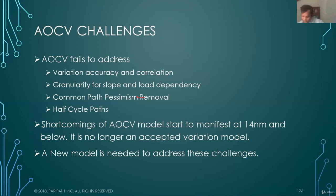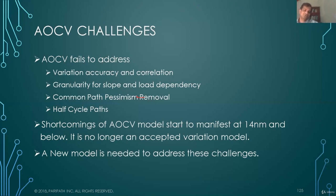That increases the runtime requirement — you need more accuracy, more runtime, and more simulation time. The other two technical issues with timing analysis were common path pessimism removal (CPPR) and half-cycle paths. They were not addressed because applying the derate did not account for both derates in CPPR and half-cycle paths. These four shortcomings start to manifest significantly at 14 nanometer and below, so AOCV is no longer an accepted variation model for those advanced nodes.